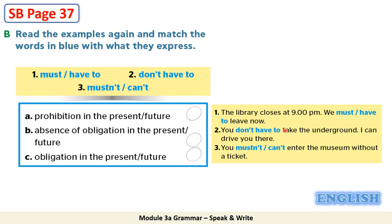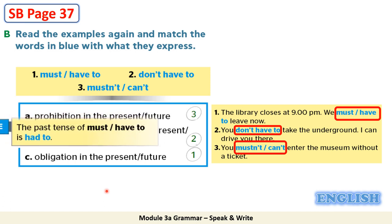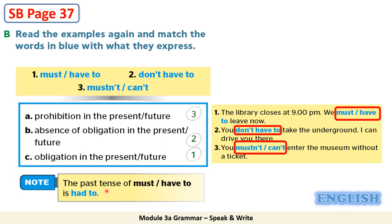Let's check your answers now. The words in blue in sentence number 3 express prohibition in the present/future. The words in blue in sentence number 2 express absence of obligation in the present/future. The words in sentence number 1 express obligation in the present/future. Note that the past tense of must and have to is had to.